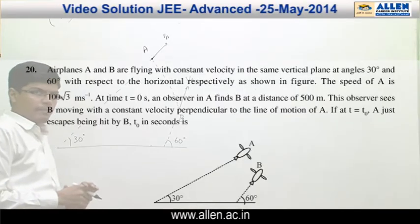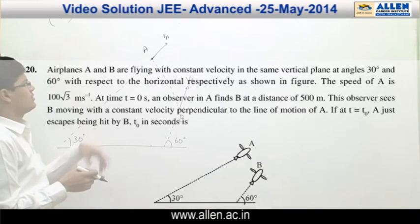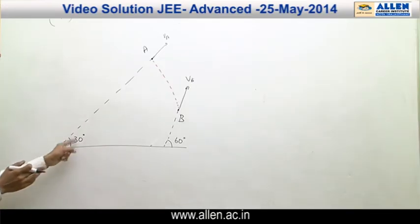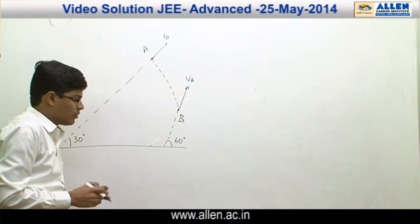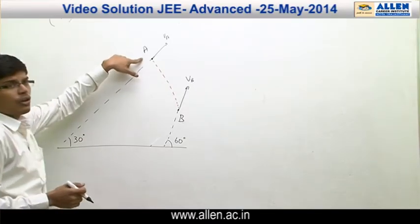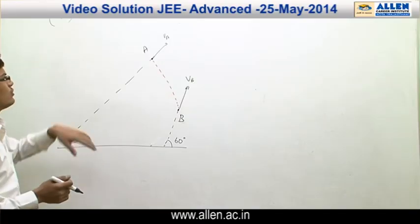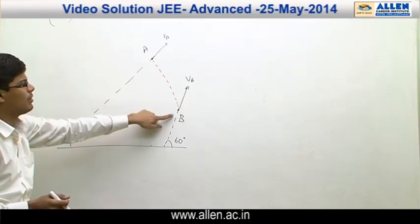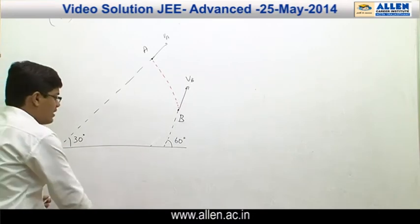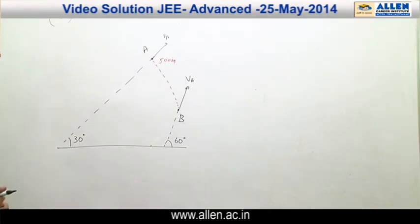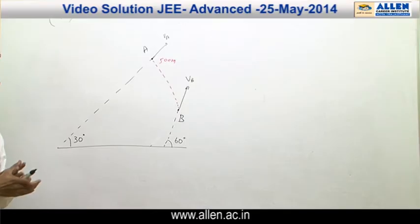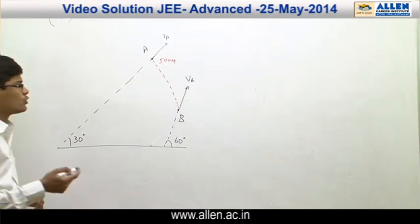Now we discuss question number 20. Two airplanes A and B are moving such that their lines of motion make 30 degrees and 60 degrees respectively from the horizontal. At t = 0, from A's point of view, B is 500 meters away. Let airplane A be at point A and airplane B at point B, with a distance of 500 meters between them as seen from A's frame. A sees B coming perpendicular to A's direction of motion.